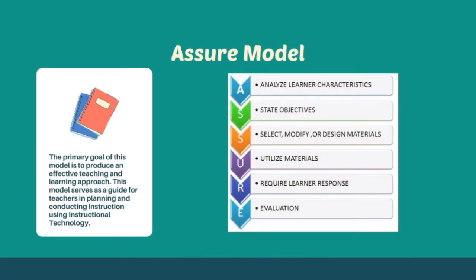The last ID model we will discuss is the ASSURE Instructional Design Model, developed by Heinich and Molenda in 1999. The primary goal of this model is to produce an effective teaching and learning approach. It serves as a guide for teachers in planning and conducting instruction using instructional technology. There are six simple steps representing the acronym ASSURE. The first phase is the analysis of your target students or audience — understand their learning styles and know their prior knowledge of the subject matter. The second phase is when the designer states learning goals and objectives, taking into account the three learning domains: cognitive, psychomotor, and affective.